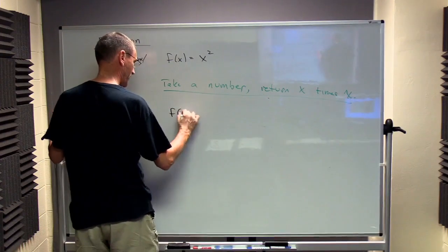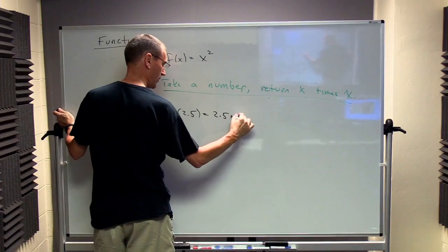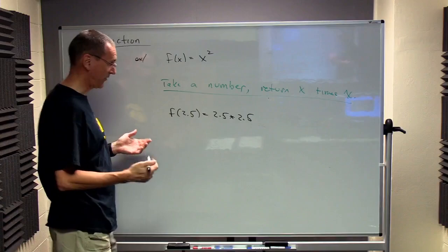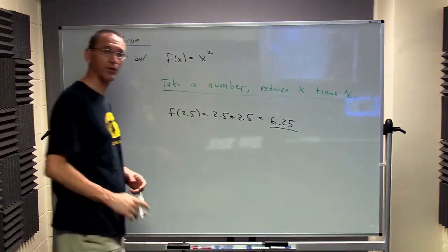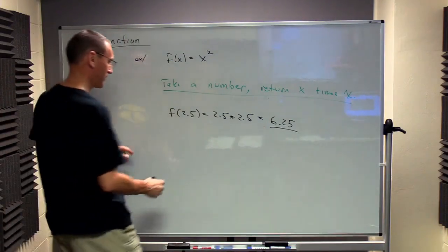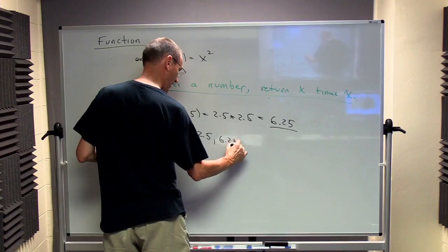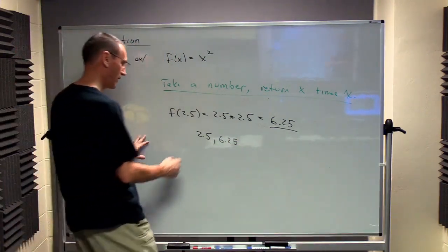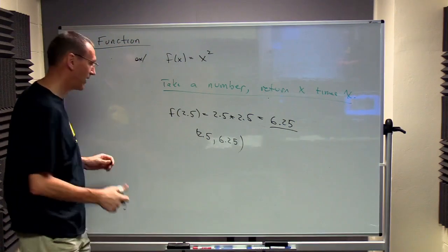So in this case, if I were to give you 2.5, the rule would say take 2.5, multiply it by itself, and I get 6.25 as the value. So there's two things. There's the number I give it, and the number we get out. And notice, because we have a pair of numbers here, we have a point. And we can think about that in terms of the coordinate plane and where this point might lie.